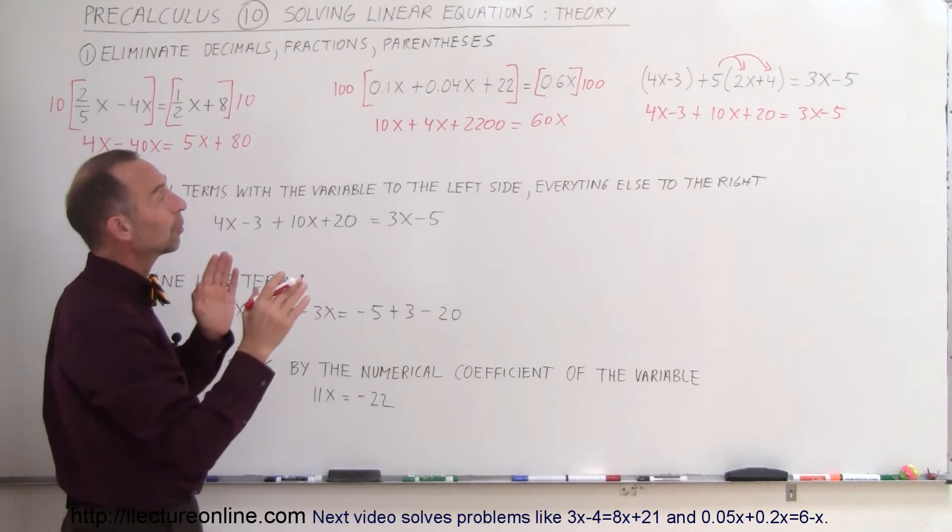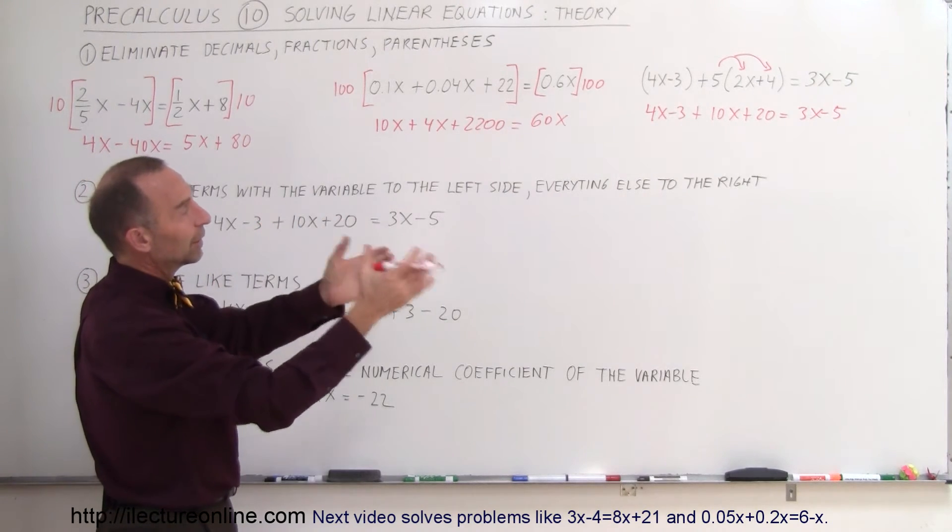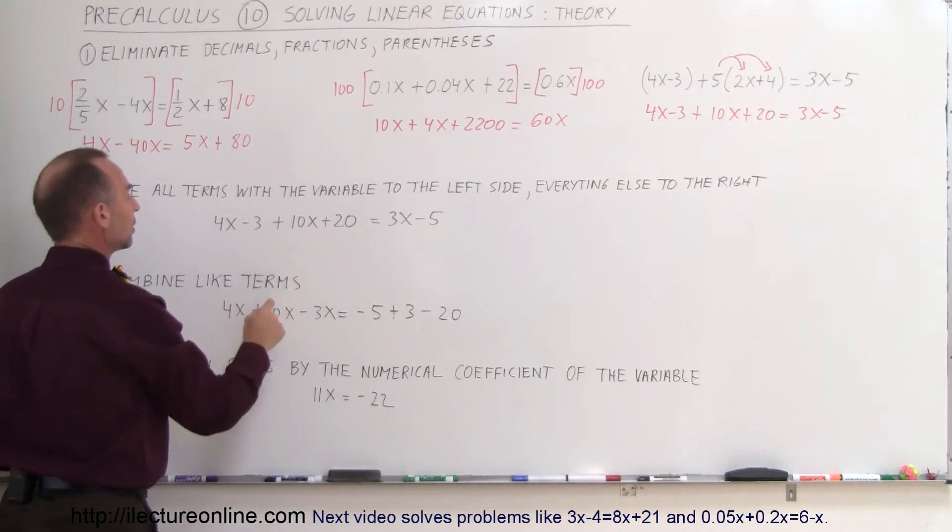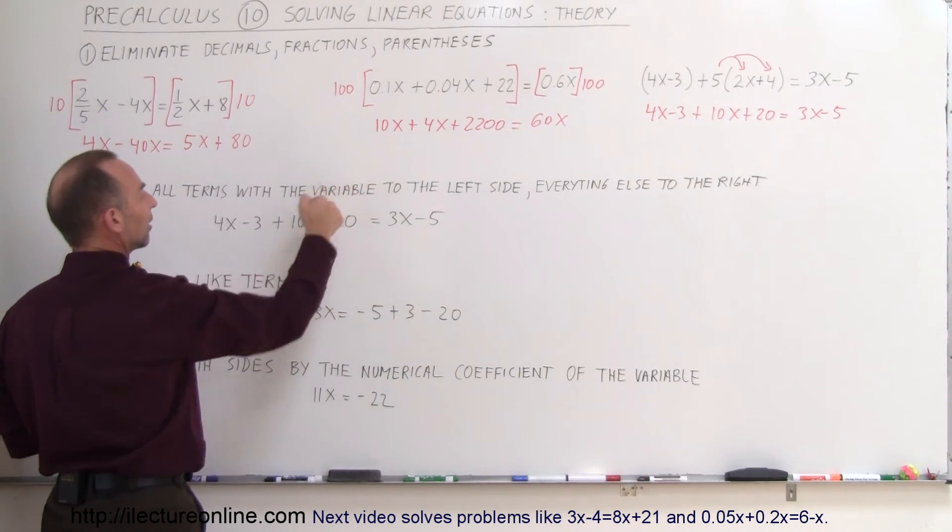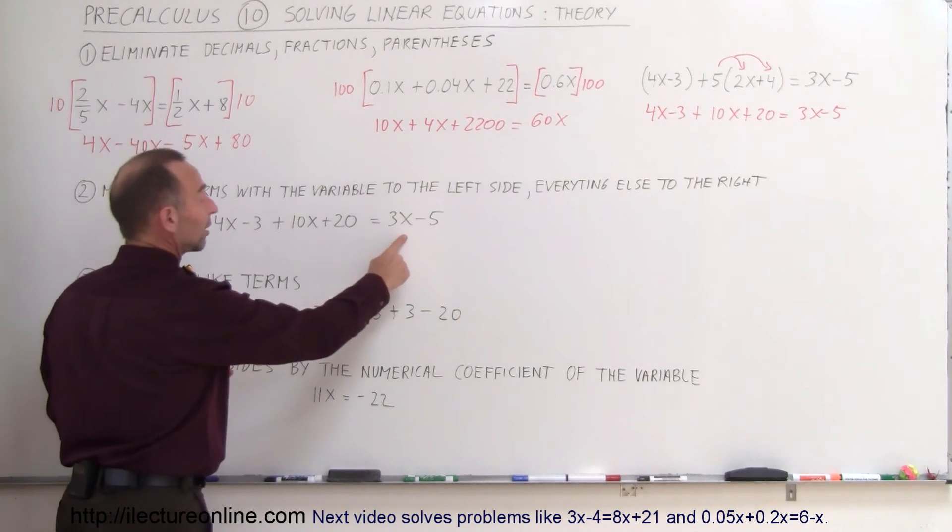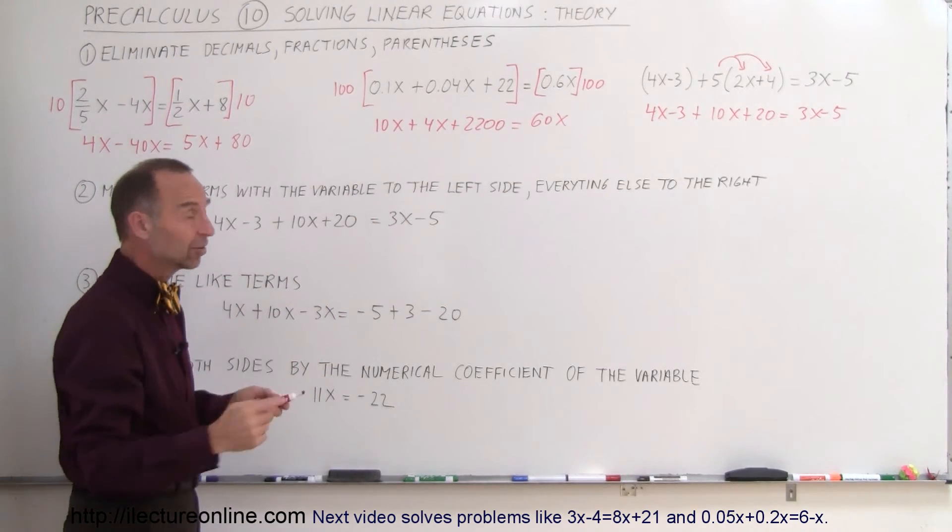Next, you want to move all the numbers or all the terms that have a variable in it to the left side of the equation. I took the third example there, put it over here, and notice that we want to move the 3x to the left side. Remember, when you move something across the equal sign, the sign changes. So the plus 3x, when you move it to the left side, becomes a minus 3x.